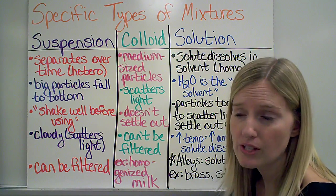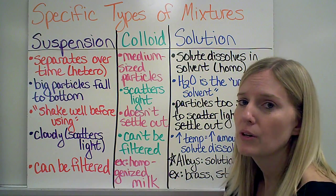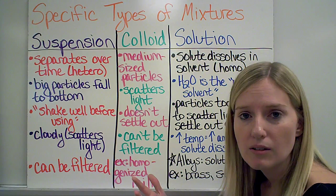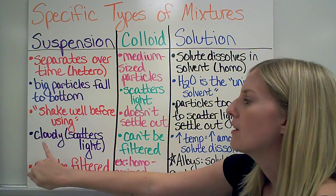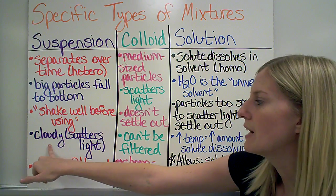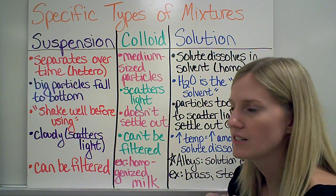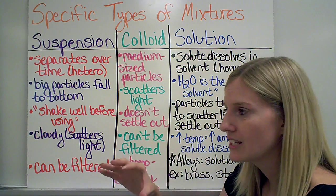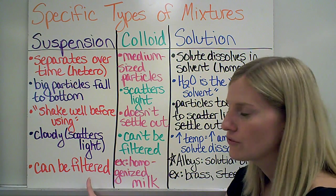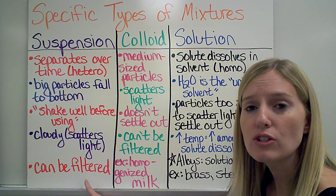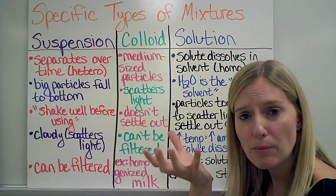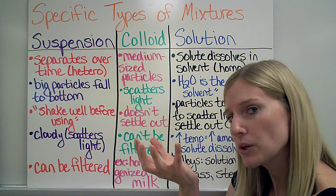And objects that say shake well before using are good examples of suspensions. So like orange juice, how the pulp falls to the bottom. We want to make sure that we shake that before we drink it so that it's all mixed together. These are going to appear cloudy, which we also say that cloudy things scatter light. So I cannot see clearly through a suspension. And I can filter these. So I can use like a strainer, for example, to collect that pulp and let the bigger parts get caught in the filter and the smaller parts come through.